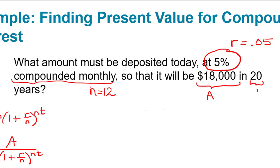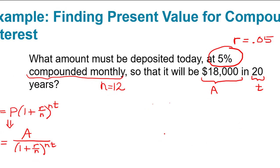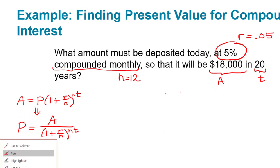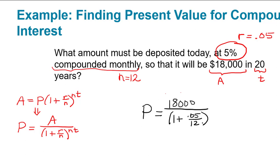Let's plug these values into the formula P equals A over (1 plus r over n) to the nt. So we're going to have P equals 18,000 divided by (1 plus 0.05 divided by 12) to the nt power. So 12 times 20 power.